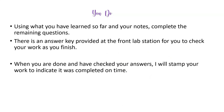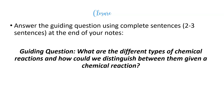Now you're going to work on the 'you do' section. You can rewatch the video as needed and check your answers with the work in the front. Don't forget that when you are finished, you answer the guiding question: what are the different types of chemical reactions and how can we distinguish between them given a chemical reaction? Explain the process you've taken to complete the exercises — that should take at least two to three sentences.